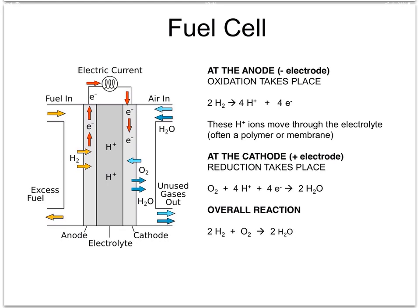So why is it called the cathode? It's called the cathode because cations are discharged there. That's the real reason why the cathode is called the cathode. These positive ions are called cations. Negative ions are called anions, and these positive ions, because they're discharged at this electrode, that's why it's called the cathode.